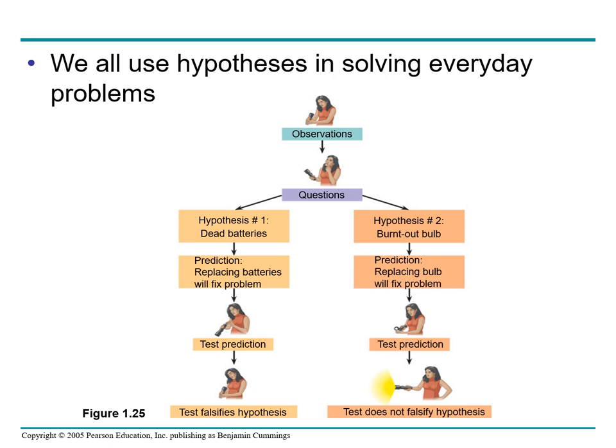Hypothesis 2 states that there is a burnt-out bulb in the torch. The prediction is that replacing the bulb will fix the problem. We test the prediction by replacing the bulb. The result does not falsify the hypothesis, so hypothesis 2 is confirmed true.